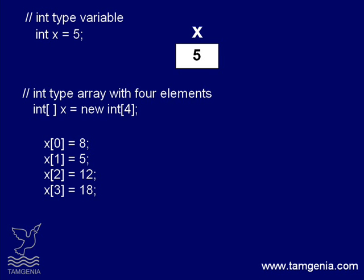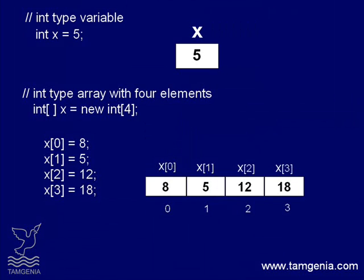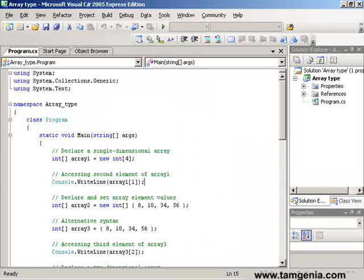In C# arrays are zero-based, so index numbers start from zero. Like in this case our integer array has 4 elements, so the index is like x[0], x[1], x[2], and x[3]. Here our x is a single dimensional array. It is going towards one direction. But arrays can be multidimensional and jagged. See this code example.